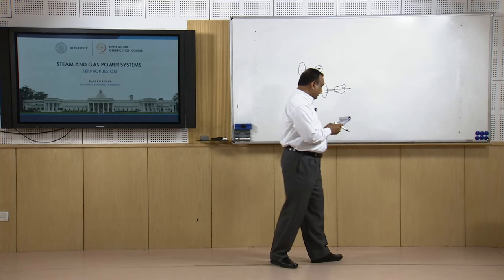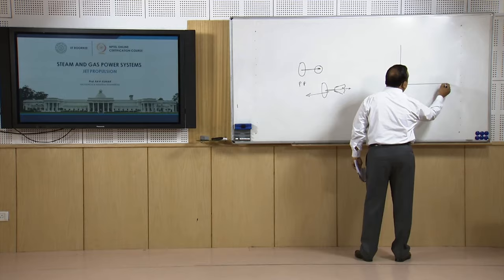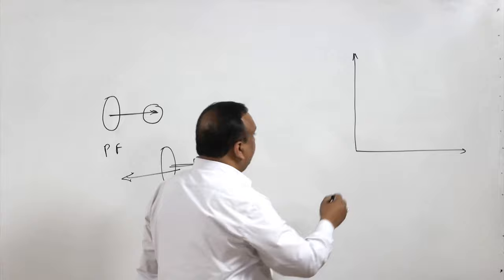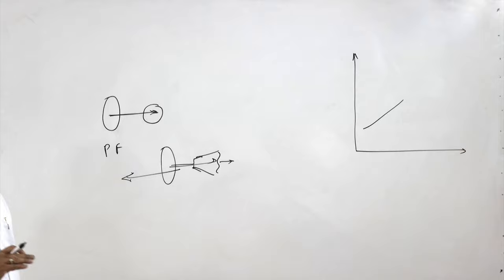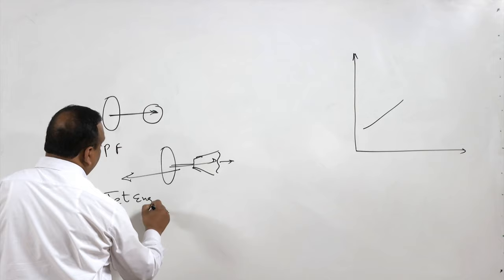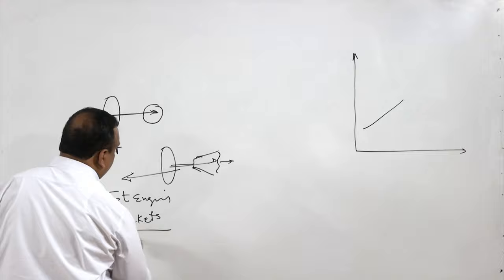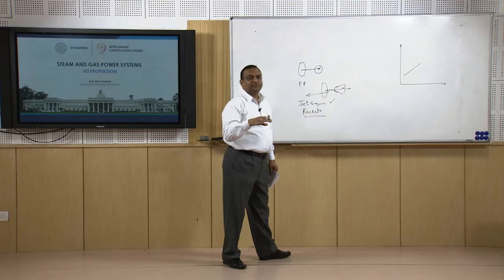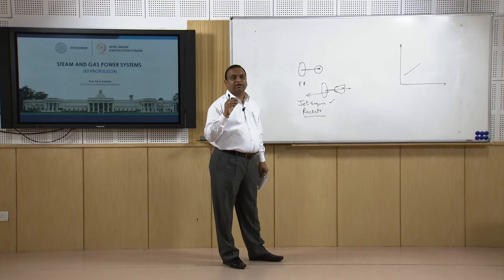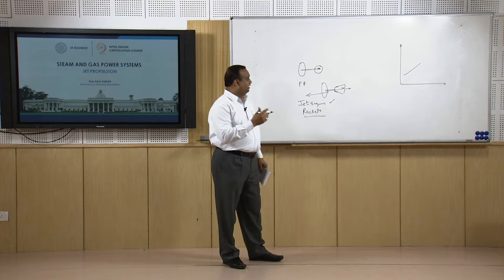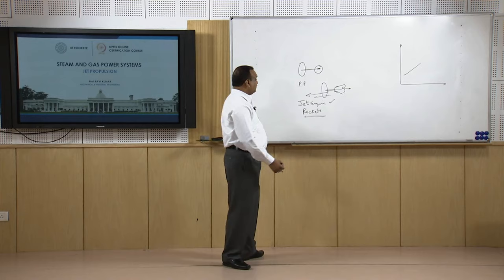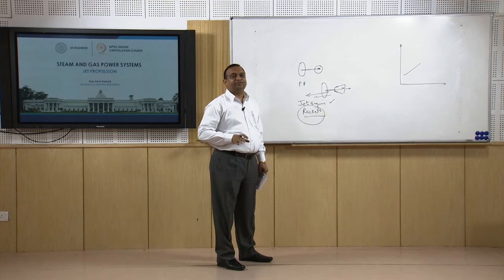In practice, if we draw a temperature-entropy diagram of a jet propulsion system, there is a diffuser. This type of system is used in jet engines and rockets. Jet engines are air-breathing — they take air from surroundings, burn fuel with it, and a high-velocity jet leaves the engine causing propulsive force. Rockets do not breathe; they have their own oxidation mechanism.